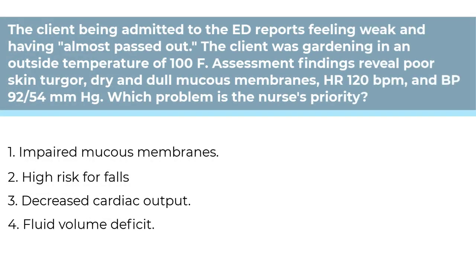The client being admitted to the ED reports feeling weak and having almost passed out. The client was gardening in an outside temperature of 100 degrees Fahrenheit. Assessment findings reveal poor skin turgor, dry and dull mucous membranes, heart rate of 120 beats a minute, and blood pressure of 92 over 54. Which problem is the nurse's priority? Number 1, Impaired mucous membranes. Number 2, High risk for falls. Number 3, Decreased cardiac output. Or Number 4, Fluid volume deficit.